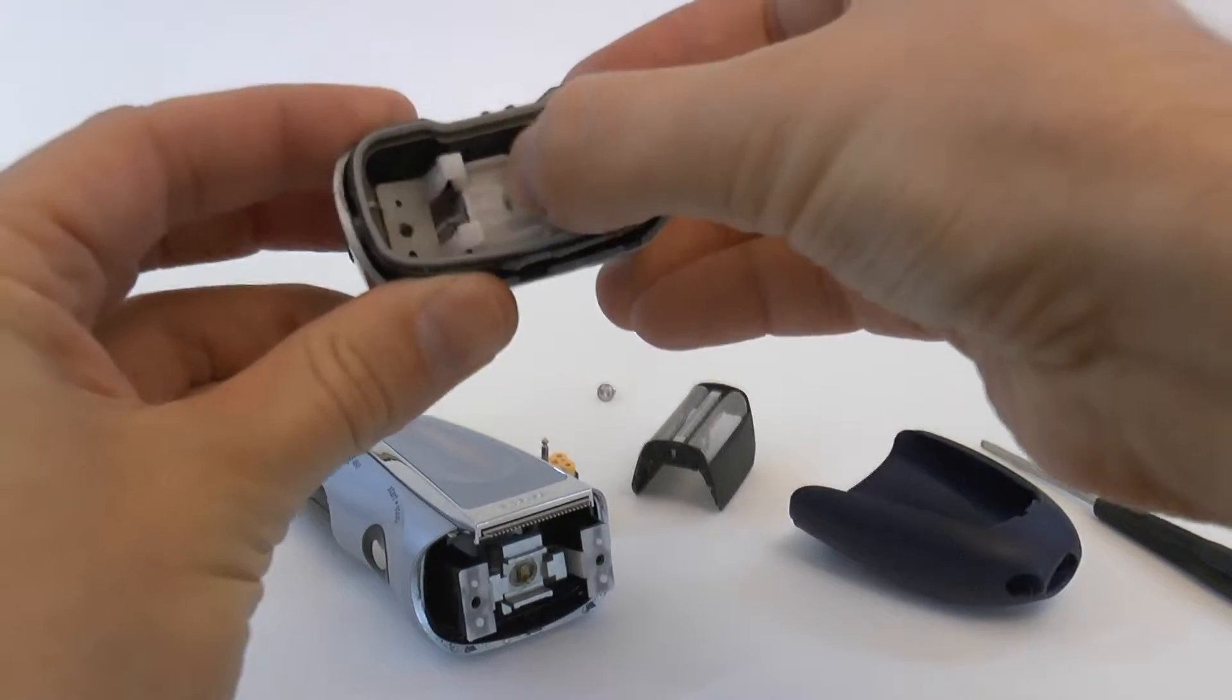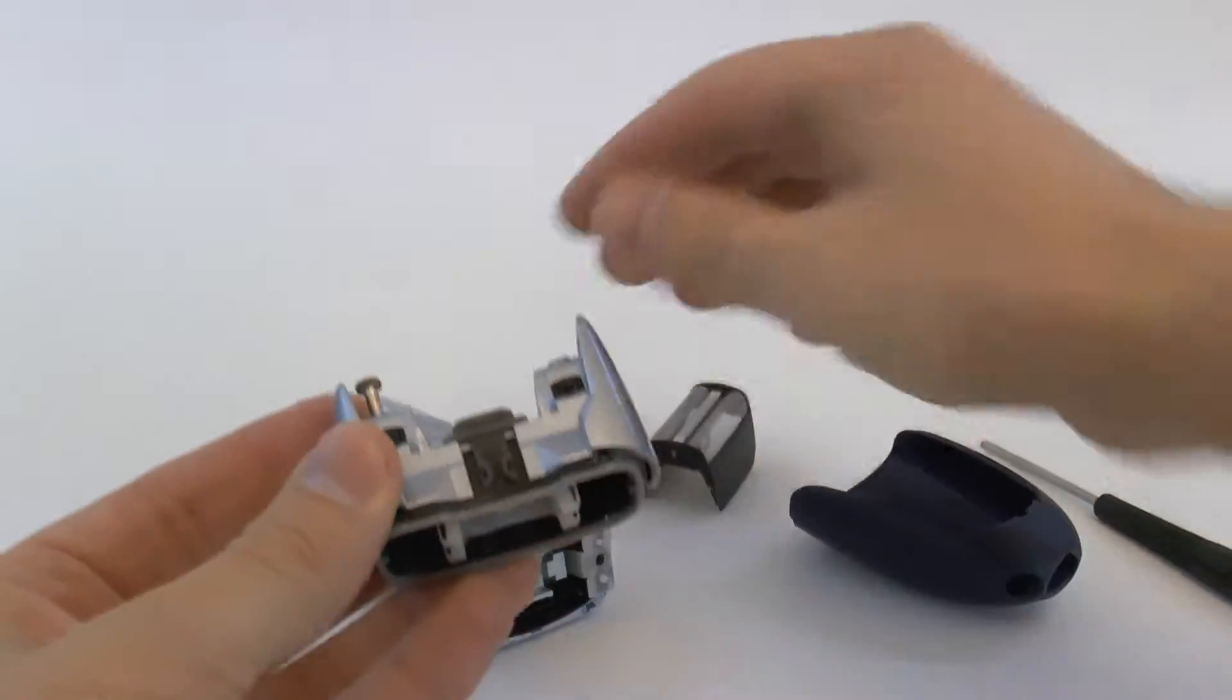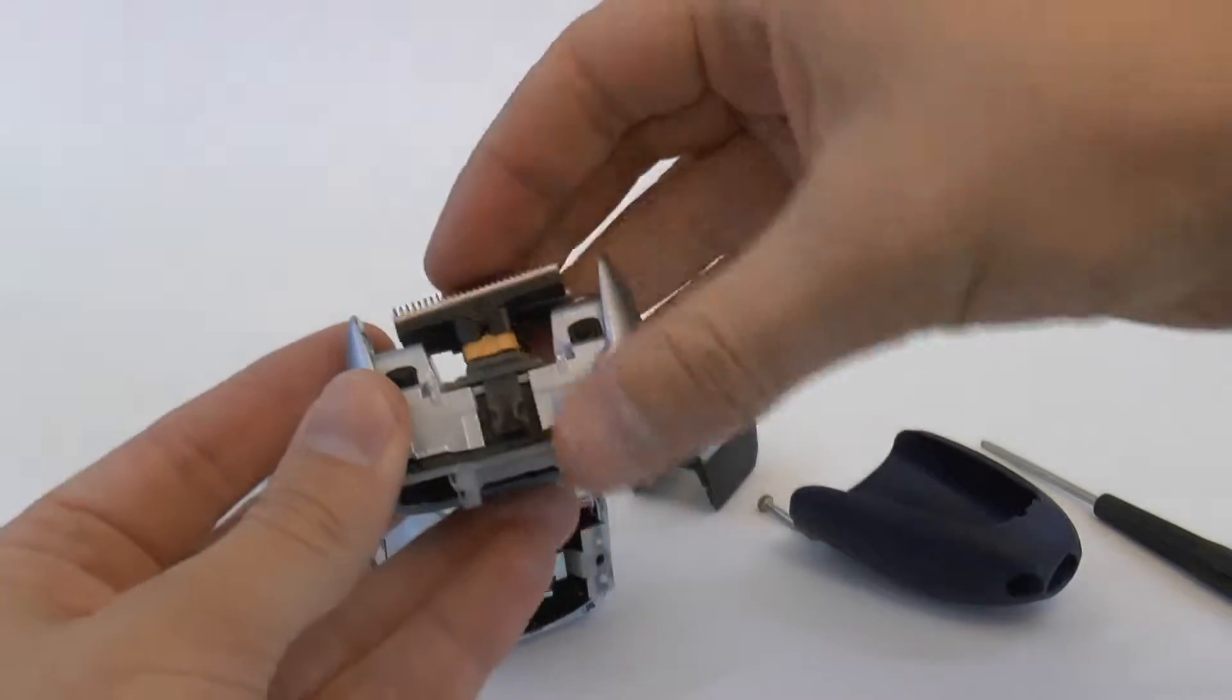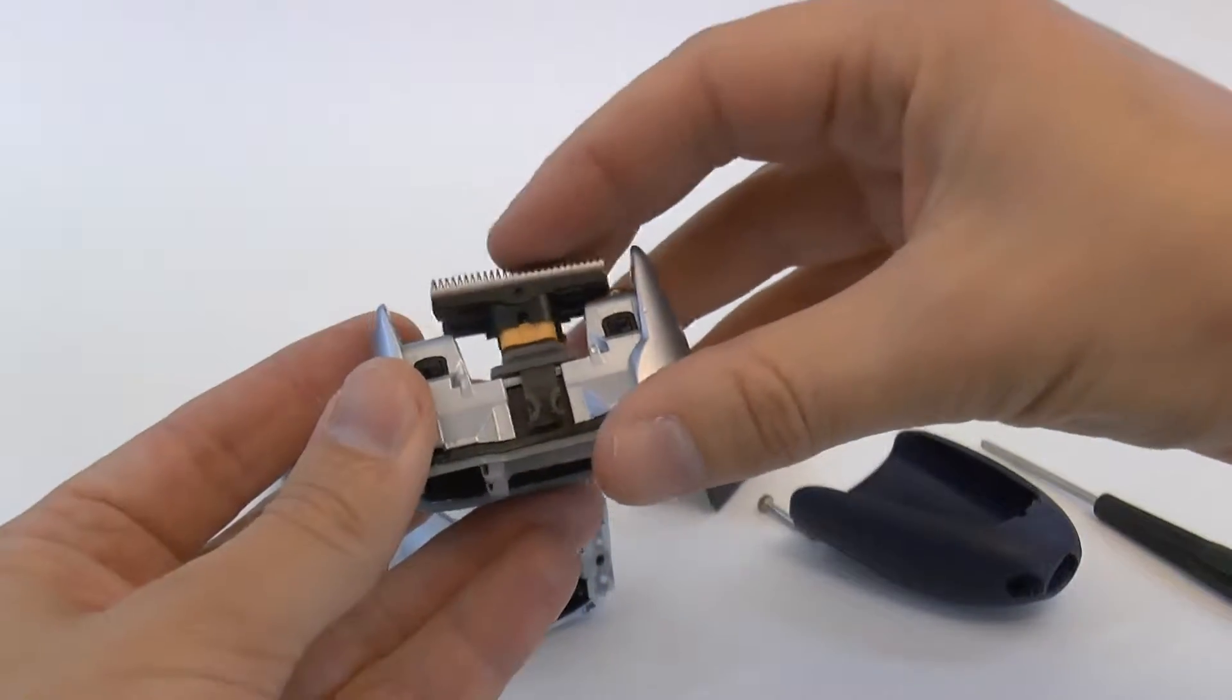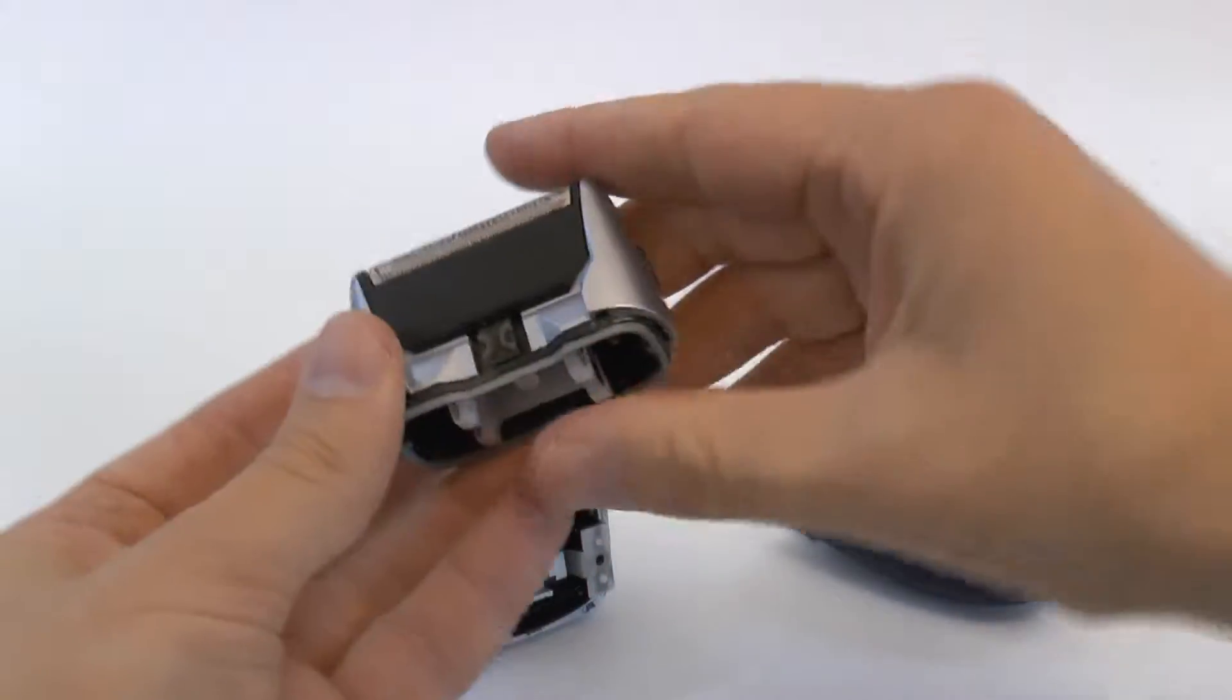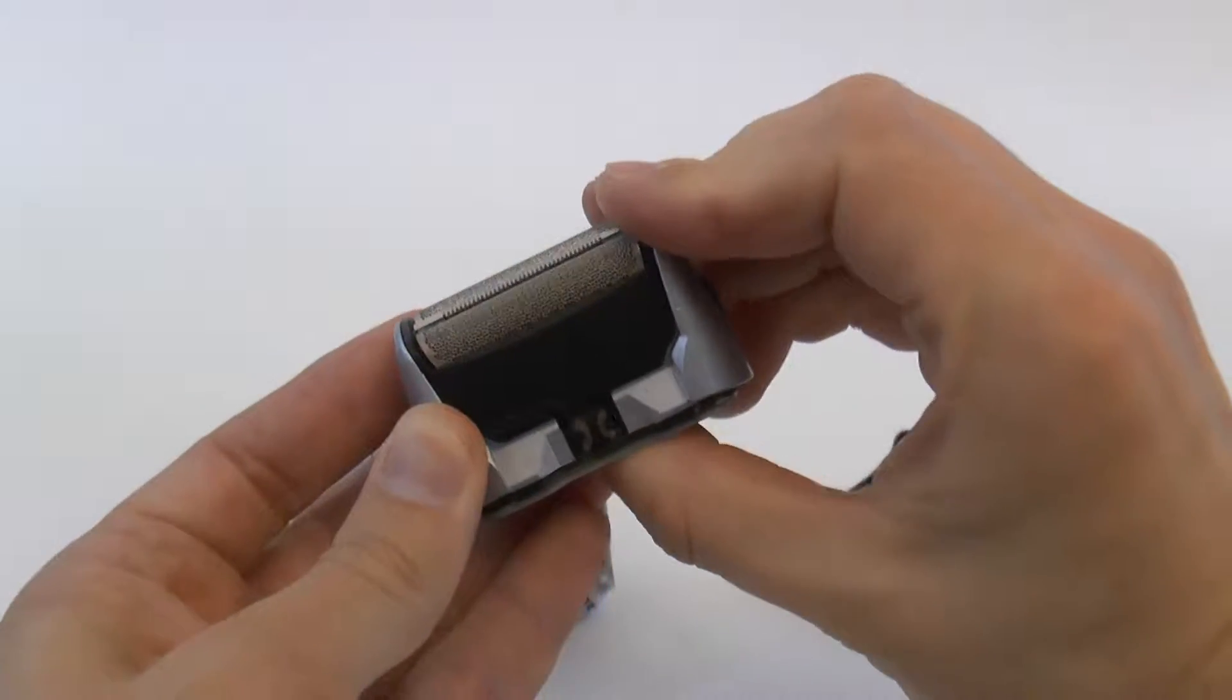This is the part that moves back and forth together with this razor block, under the perforated foil. And that's how this electric shaver shaves.